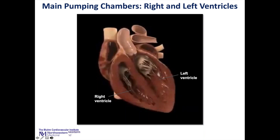The left ventricle pumps blood out to the rest of the body, and the right ventricle pumps blood to the lungs. We're going to focus mostly on the left side of the heart today since we're talking about the mitral valve between the left atrium and left ventricle.